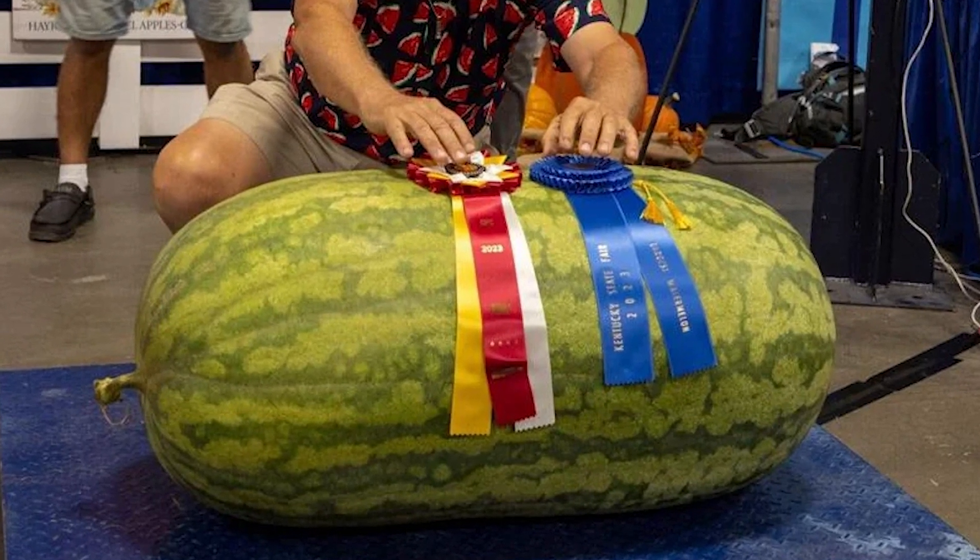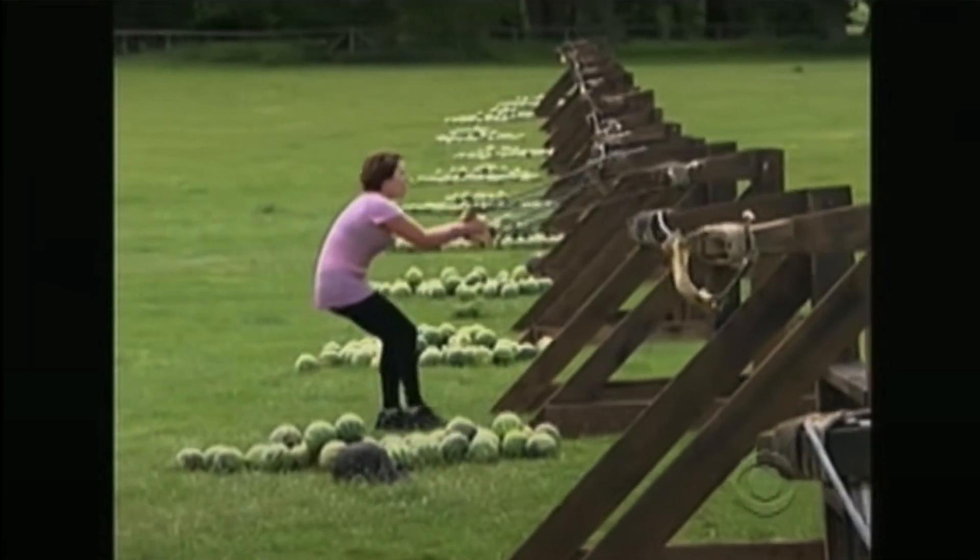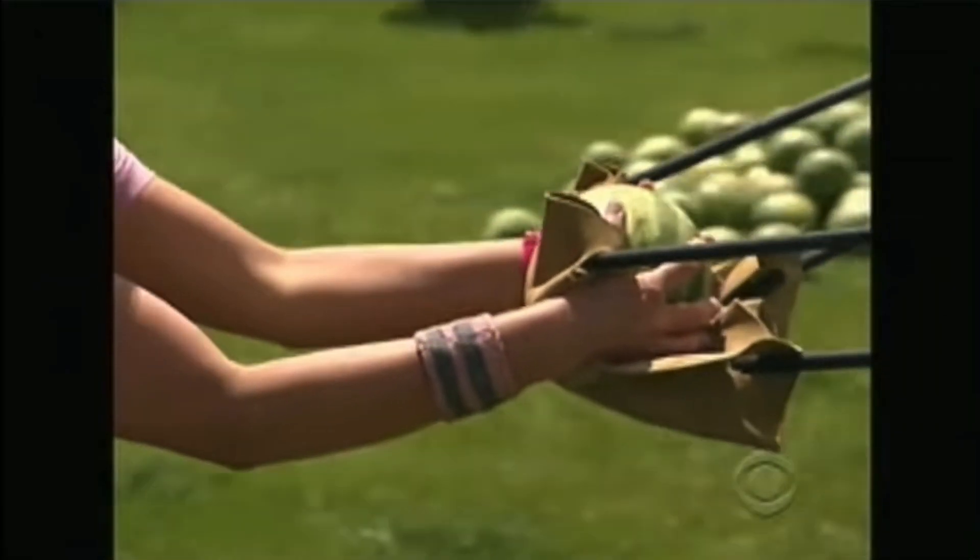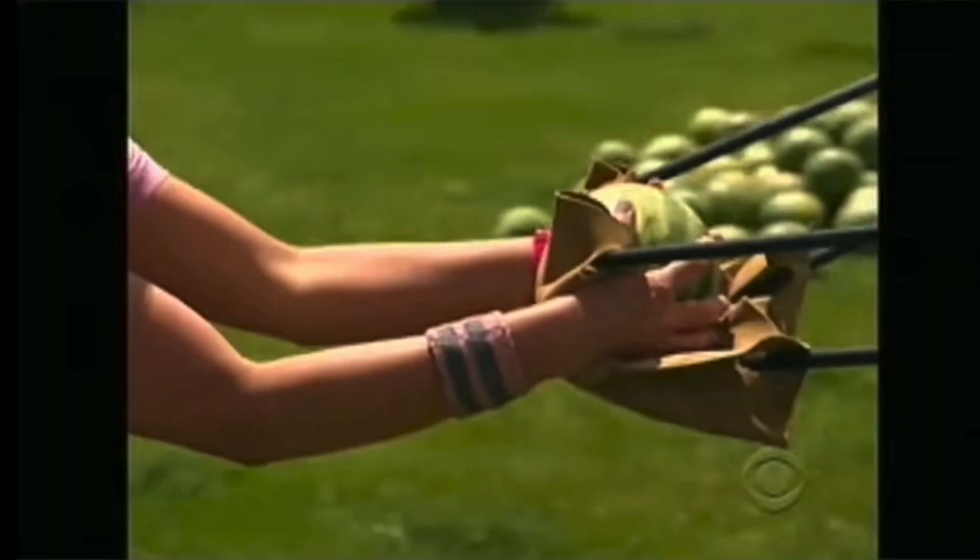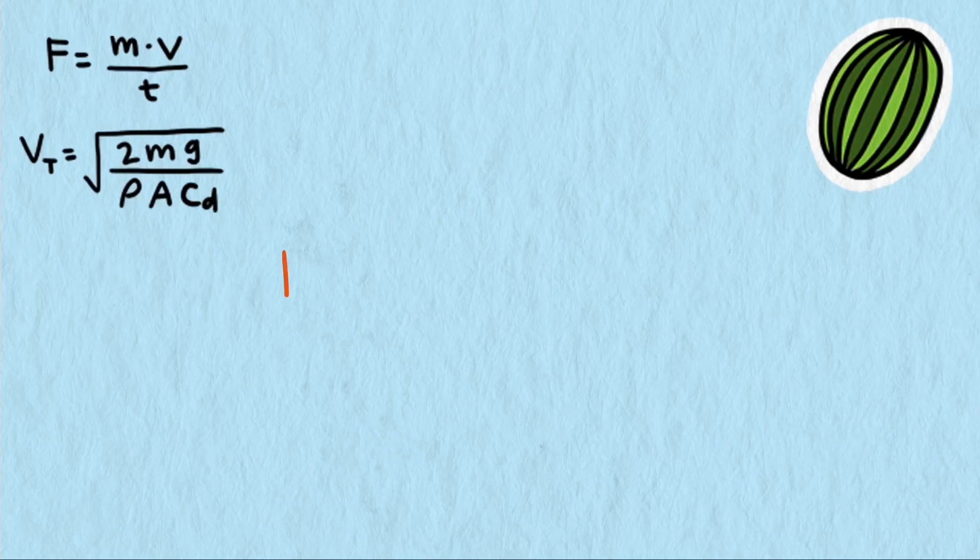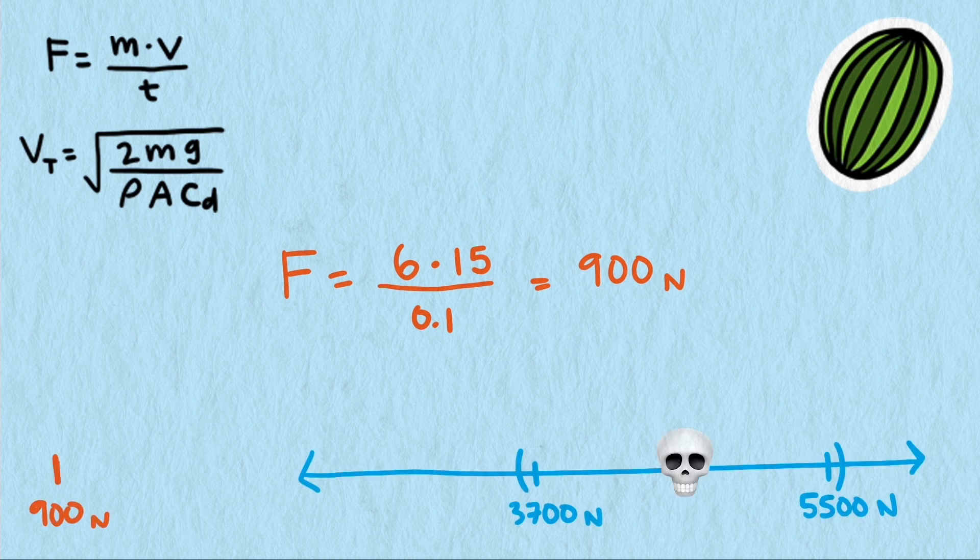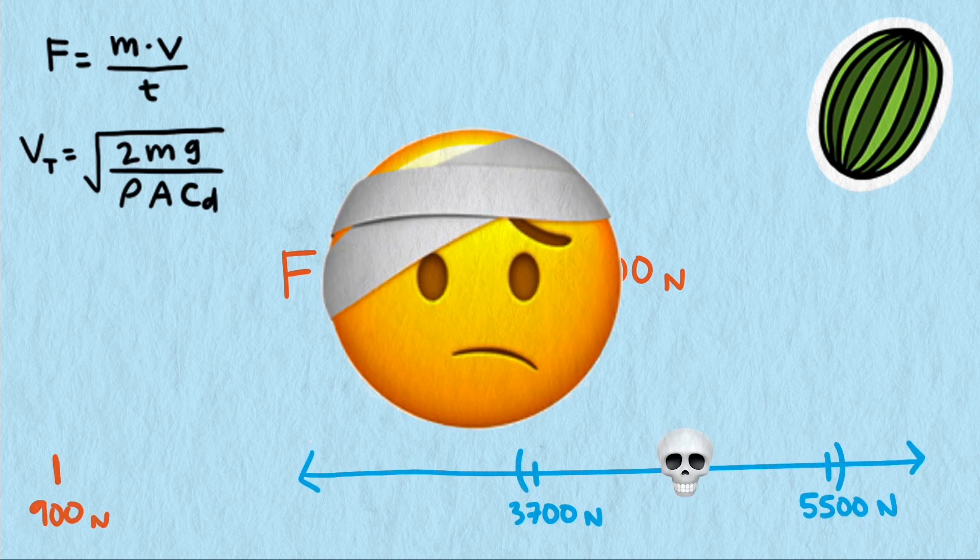Lastly, we need the mass of the watermelon. Looking at this clip here, these watermelons look smaller than average, which is what we used when we threw our watermelon mathematically off the Empire State Building. I'd guess these are about 10 inches long, so probably more like 6 kilograms in mass, or around 13 pounds. Putting this all together, we get an impact force of just 900 newtons, not within our range of death, but probably a good concussion, which is all she walked away with.